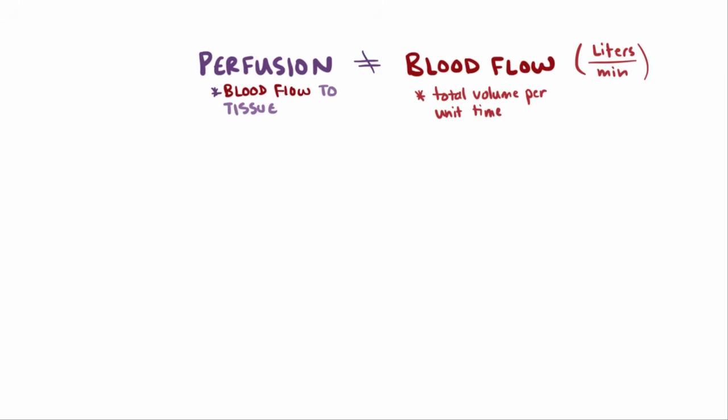Remember that perfusion and blood flow are slightly different. Blood flow is the volume of blood flowing per unit time, like liters per minute. Perfusion is a measurement of how much blood is flowing to a chunk of tissue per time, so it might be given in liters per minute per gram of tissue.